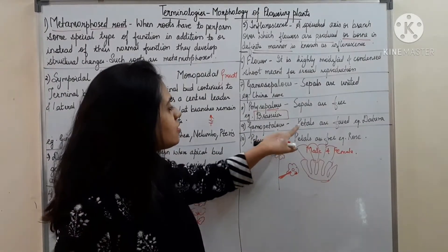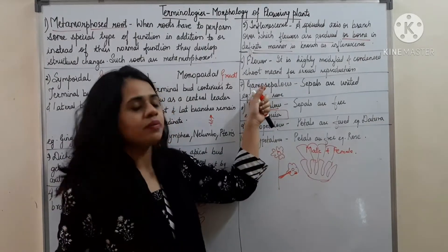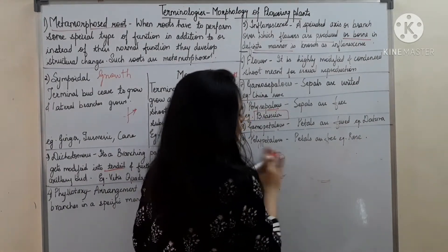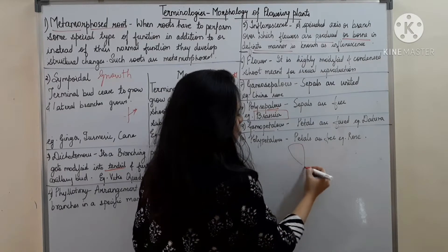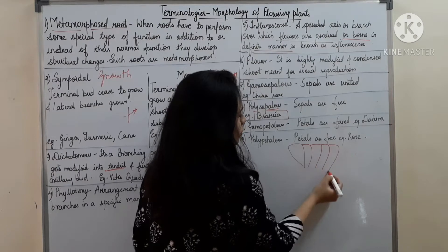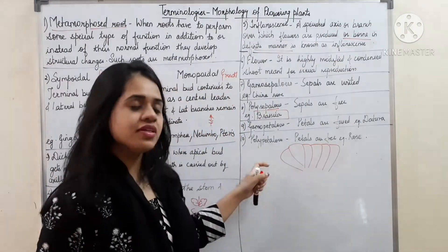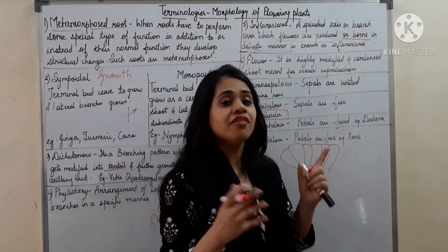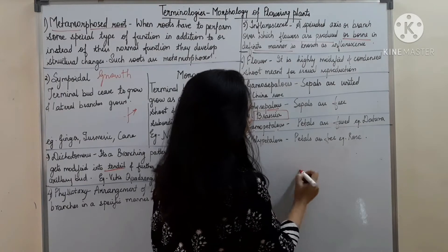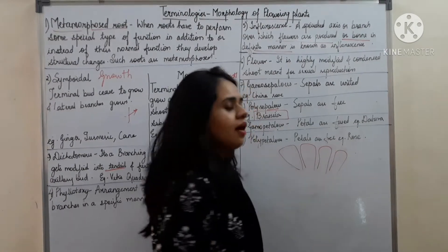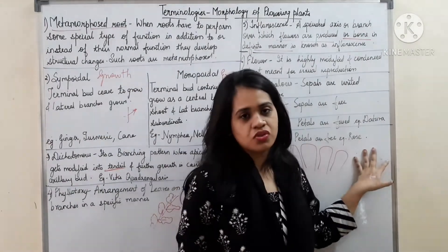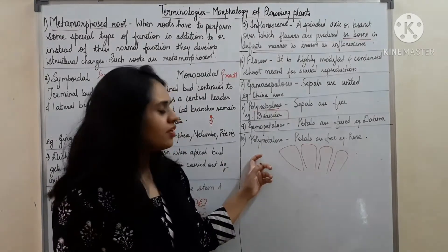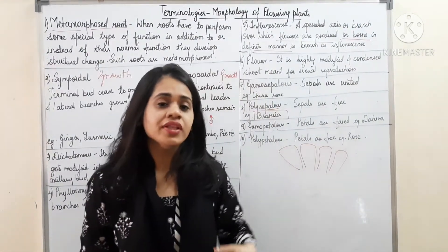Gamopetalous means petals are fused. Here, gamo again means fused, but here it applies to petals. The petals will be fused together. Example: Datura. The last one is polypetalous, which means petals are free. Example: Rose. So these are a few definitions, and you should be very thorough with them.